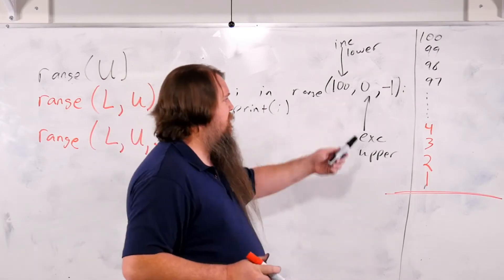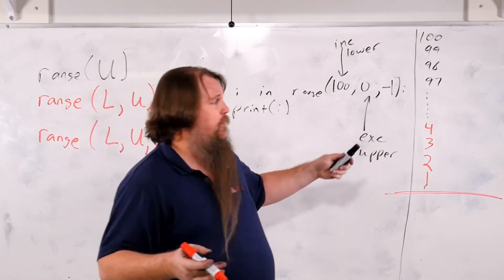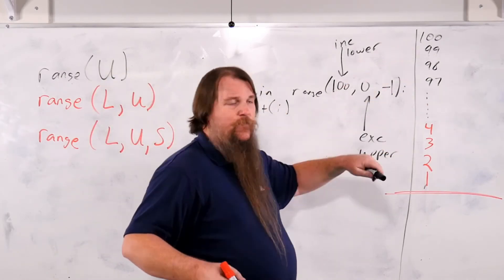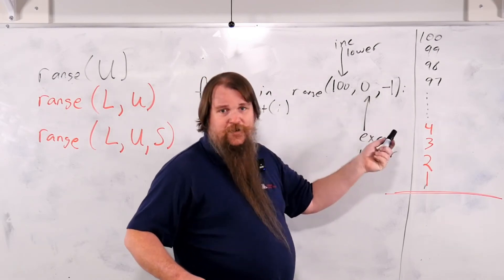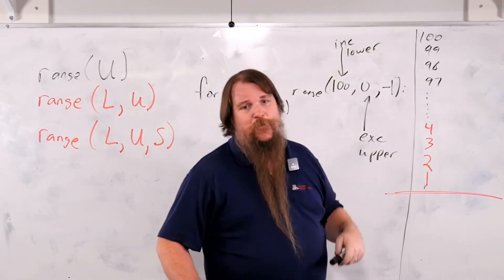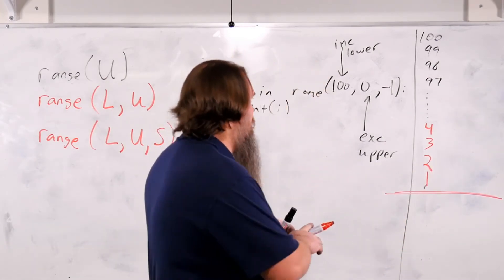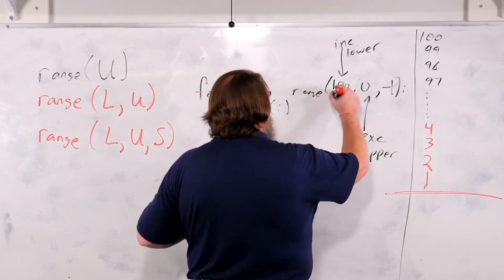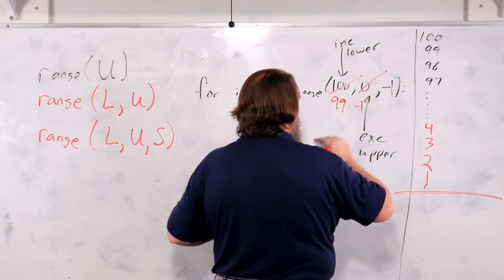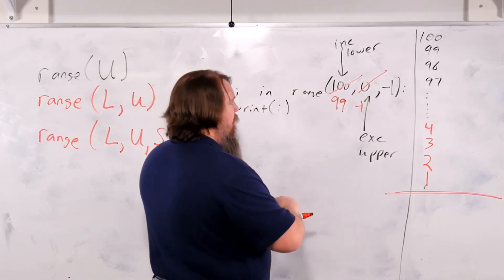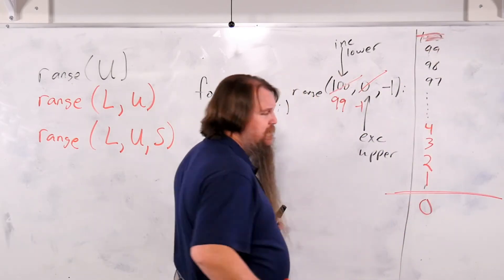So you'll notice that when we had, if we had range 0, 100, 1, then it would go from 0 to 99. If we have 100, 0, negative 1, it starts at 100, it never reaches 0. How could we change this to make it 0 to 99? We change this to 99. We change this to negative 1. And then it would never run the 100 loop. And it would run a 0 loop at the bottom.